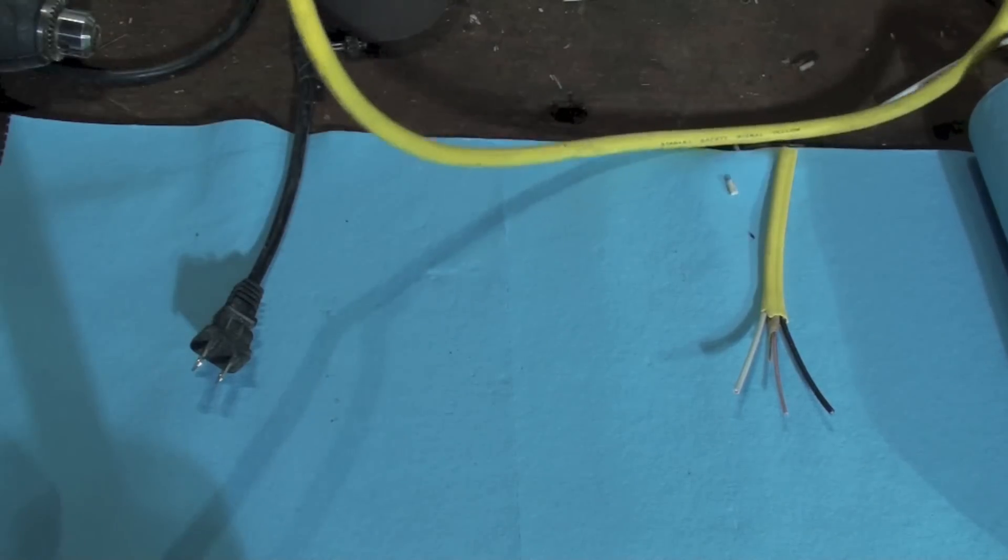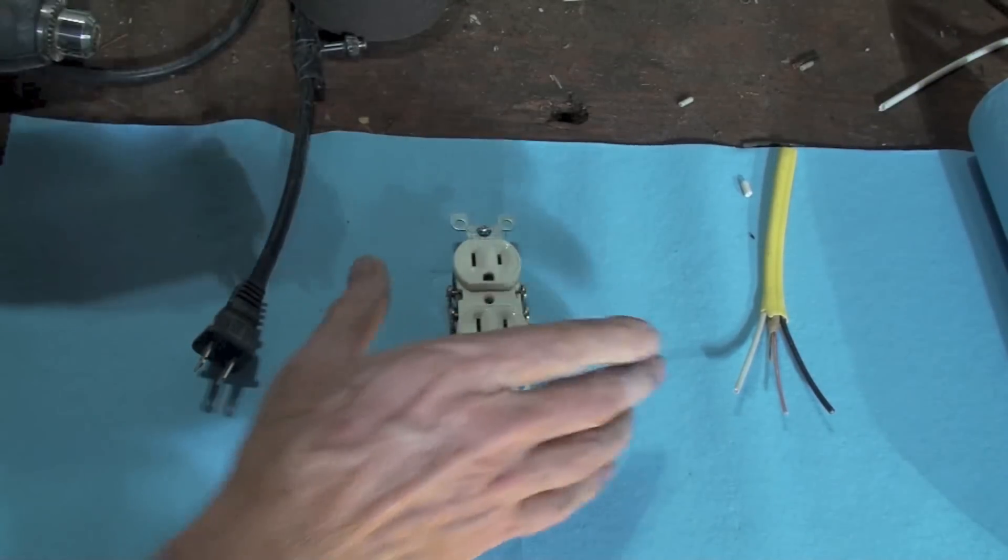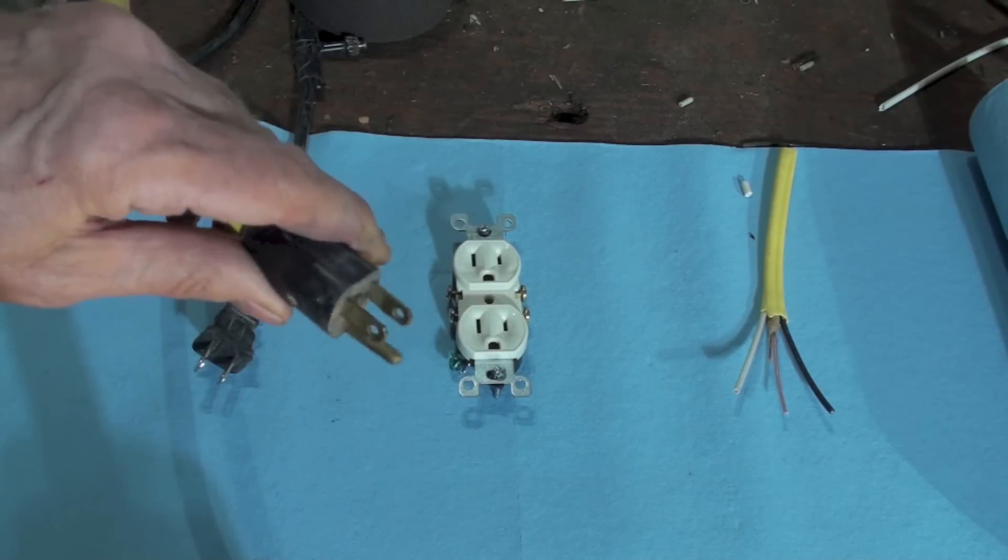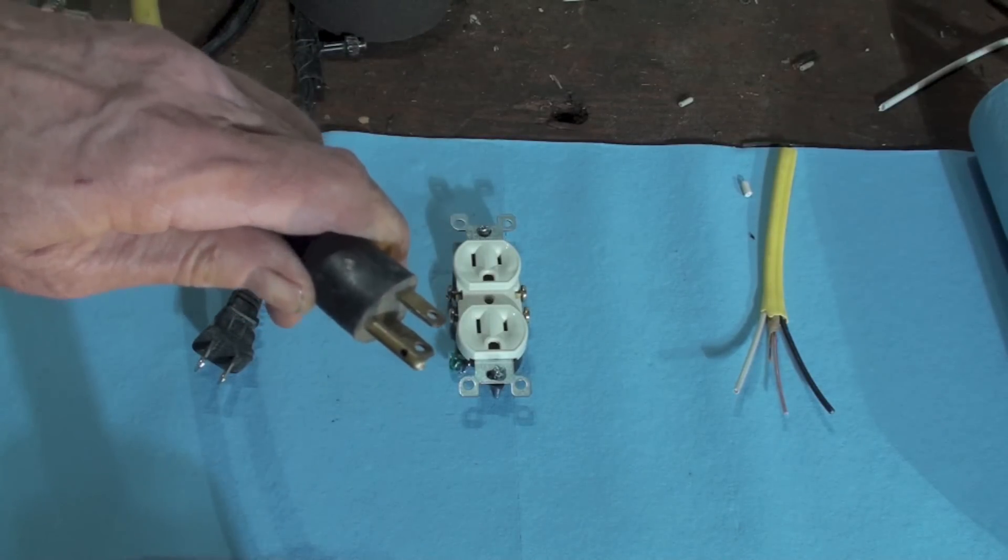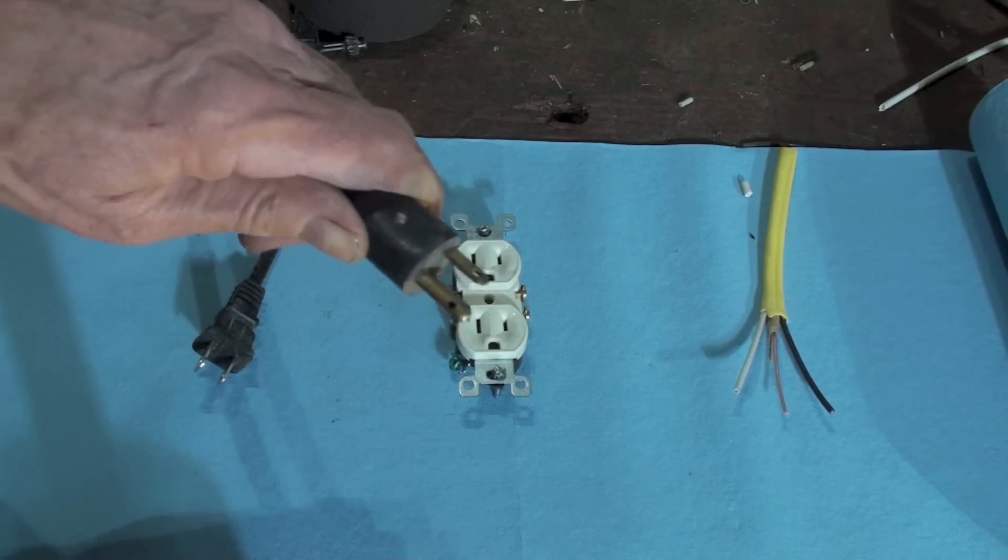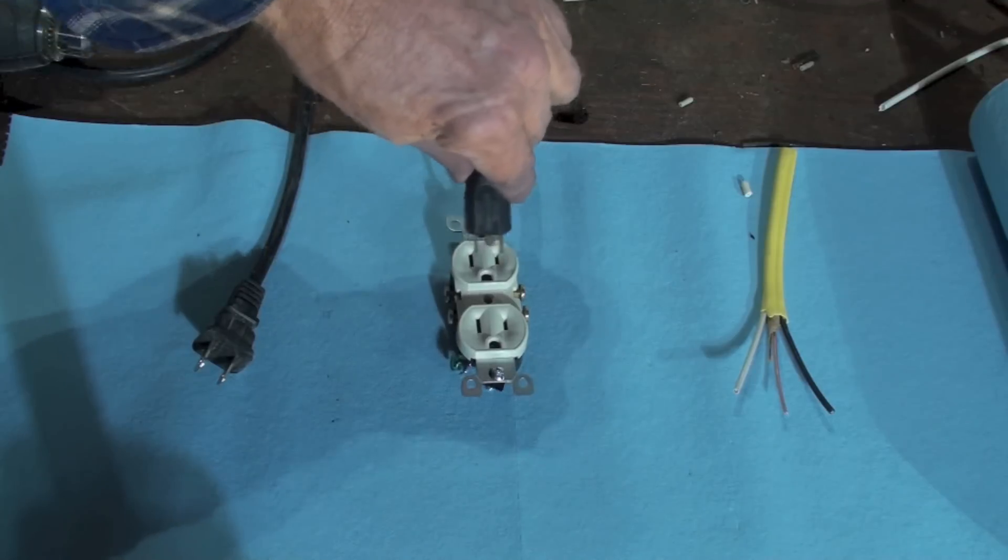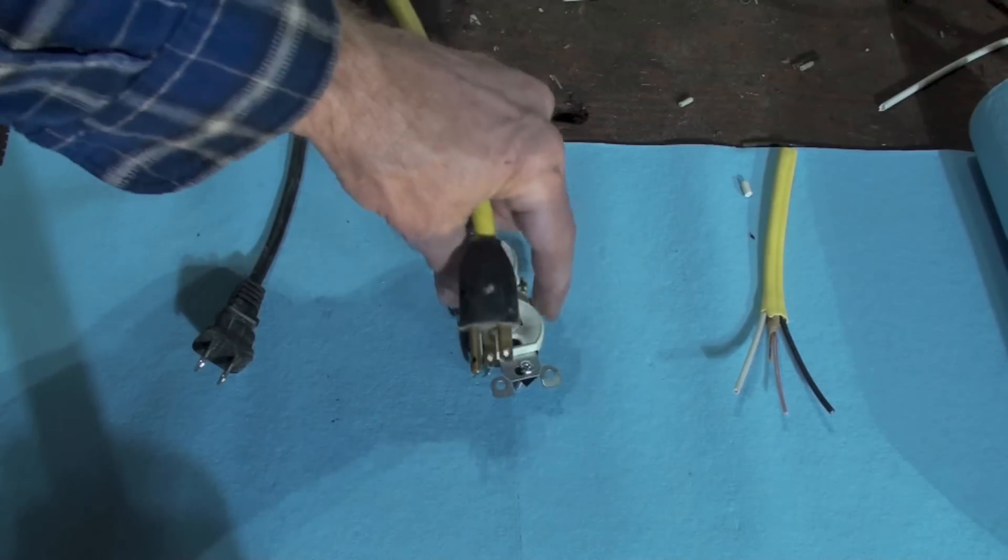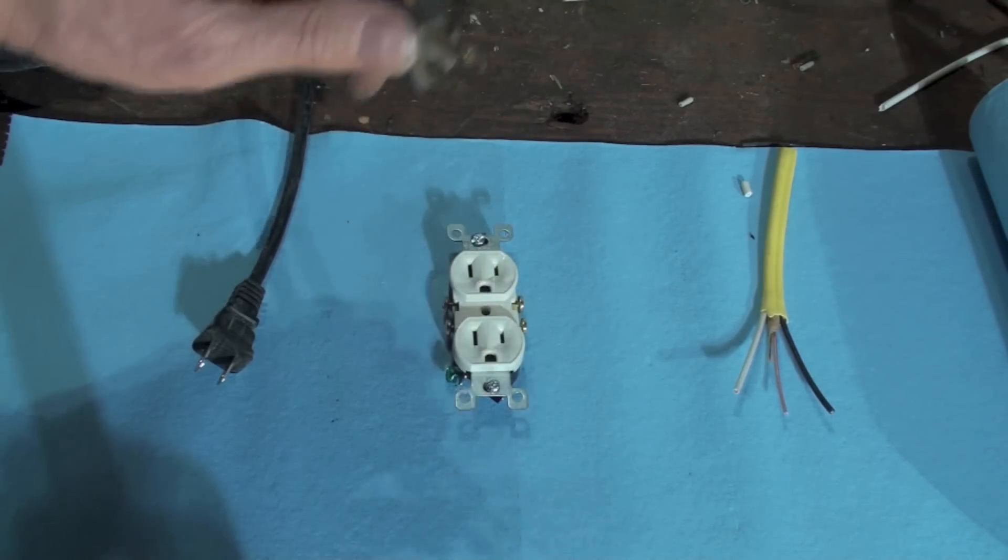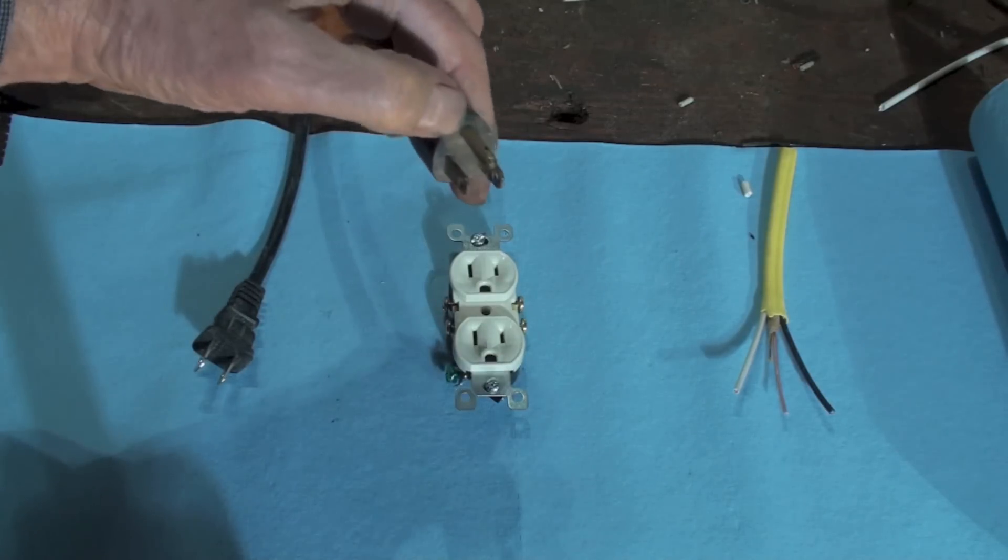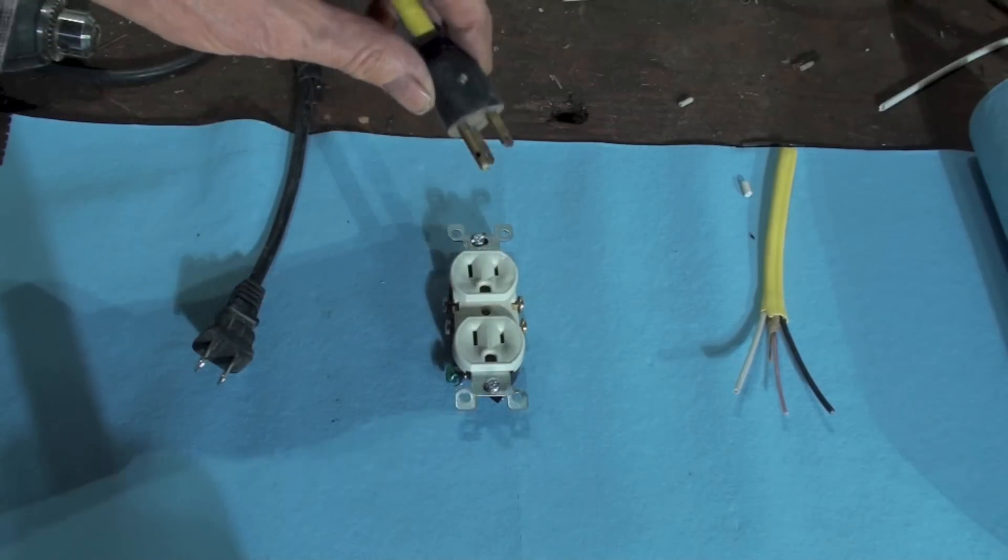Now both of the male ends of this are the same size, but it'll only go in one way because of this ground. Now if you try to put it in this way, it doesn't go. And so if you want it to go on opposite, I guess you can cut off the ground - don't have to get cutting off ground, guys, not a good idea.